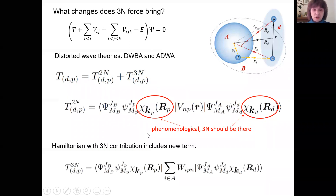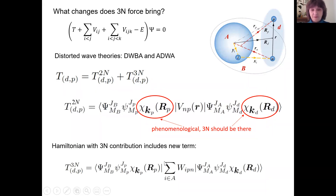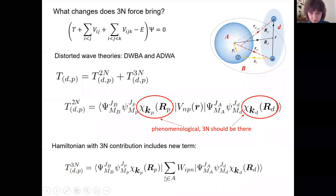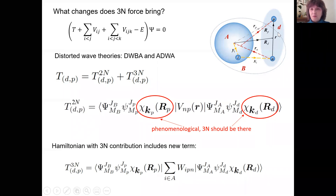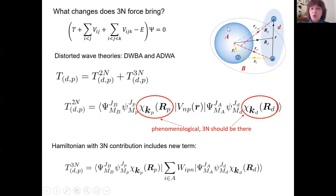This additional term differs by having a different transition operator, where we now have the three-nucleon force between the proton, the neutron, and a nucleon within the target. We need to make a summation over all such nucleons in the target.